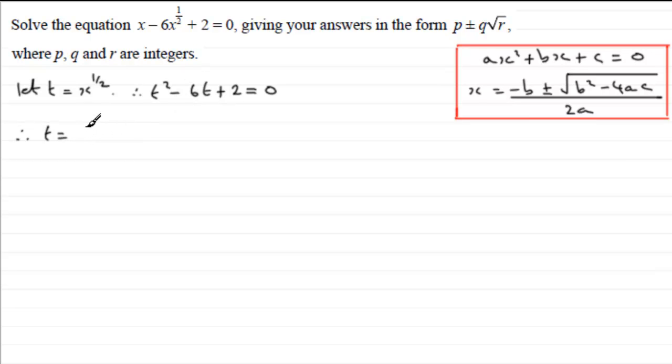So t in this case would equal minus b, that would be 6 because we're doing minus minus 6, plus or minus the square root of b squared, so we've got minus 6 all squared minus then 4 multiplied by a, a being 1, multiplied by c being 2, all divided by 2a, 2 times 1, which is obviously 2.